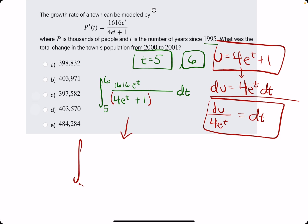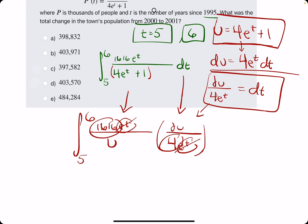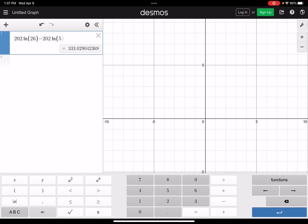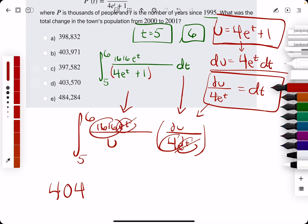We divide by 4E to the T to get DT by itself. We rewrite the integral, leaving the 1616E to the T on top for the time being. U replaces the denominator. DT is replaced by DU over 4E to the T. Cancel E to the T's. Gather the 1616 divided by 4. I wonder if it would work like this. If 16 divided by 4 is 4 and 16 divided by maybe 44. That can't be right. 440? I don't know. Let's see what it is. 444 maybe. 1616 divided by 4 is 404. That makes sense.